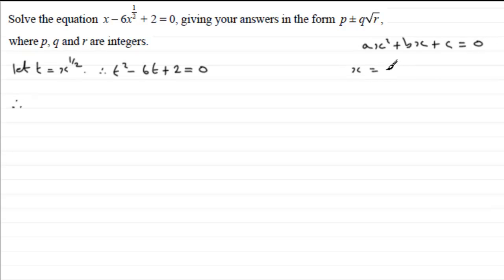So if we use the formula, remember the quadratic formula, if we've got something of the form ax squared plus bx plus c equals 0, then x equals minus b plus or minus the square root of b squared minus 4ac all divided by 2a.